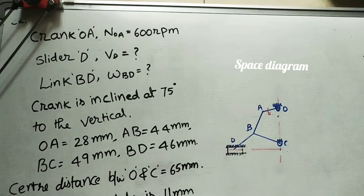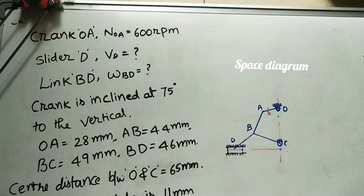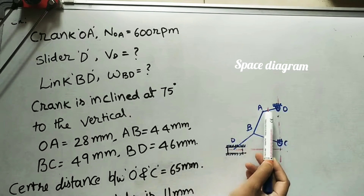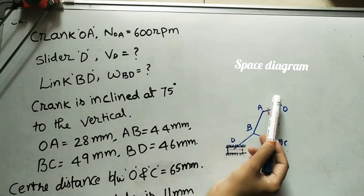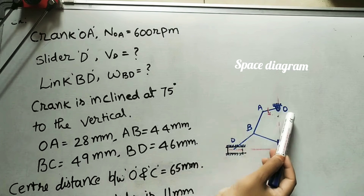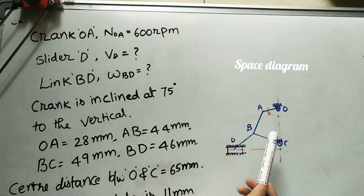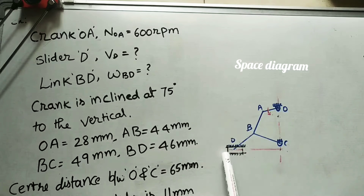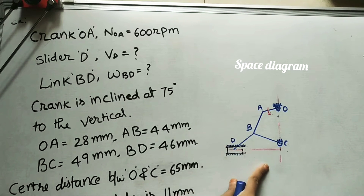In today's class, we will take one of the mechanisms. The given diagram of this mechanism is like this. Here OA is the crank. It is rotating clockwise. Because of this rotation, this slider will slide in a horizontal path. This one is the mechanism.